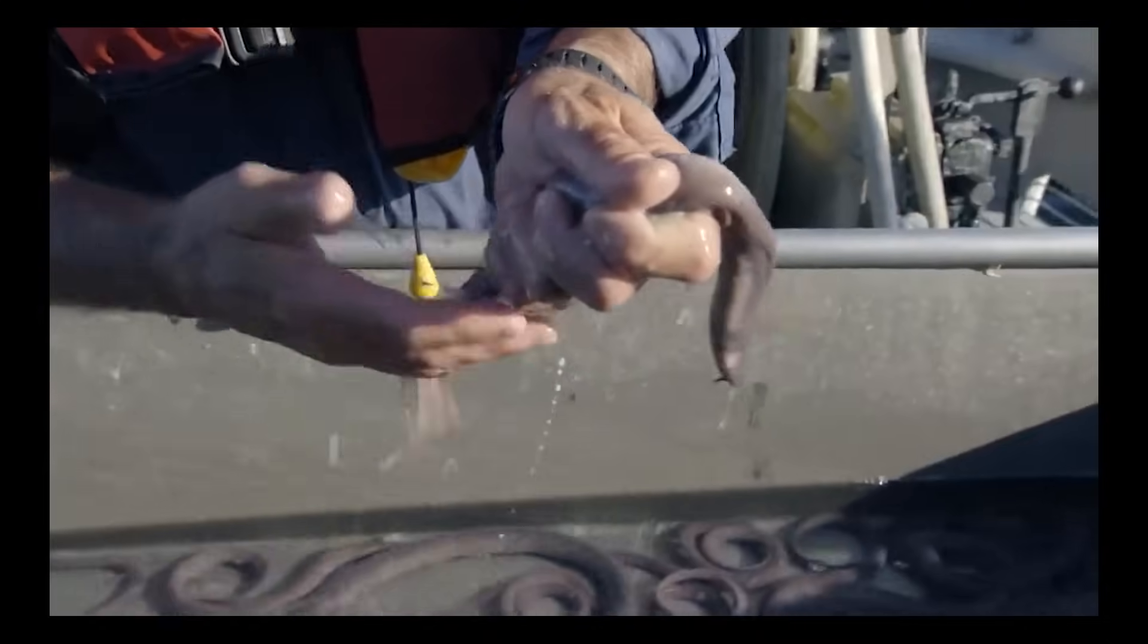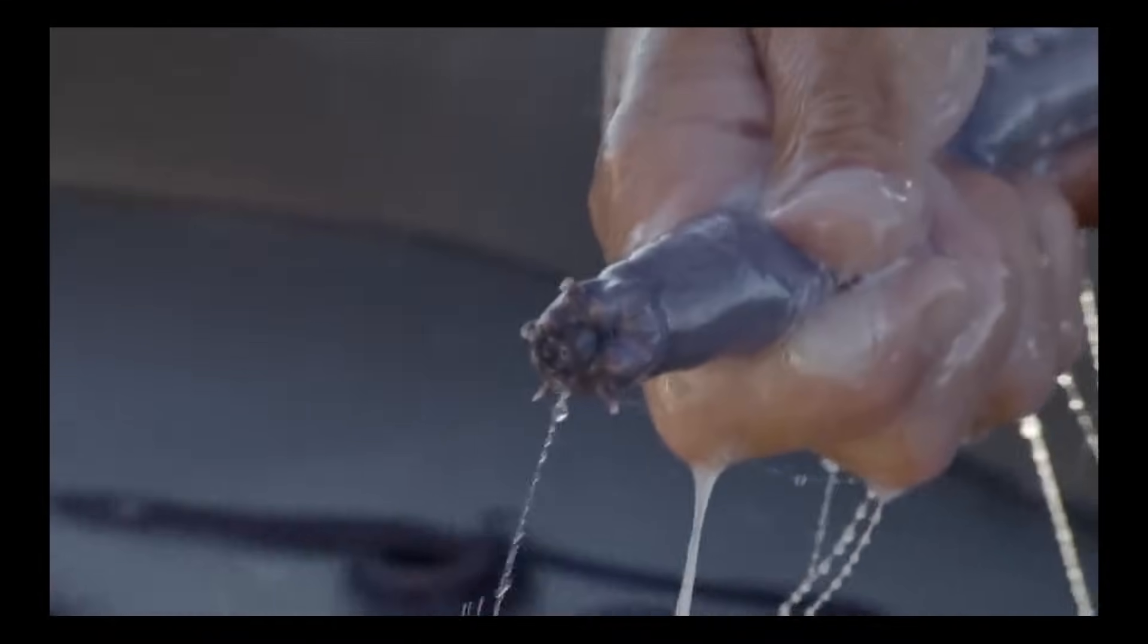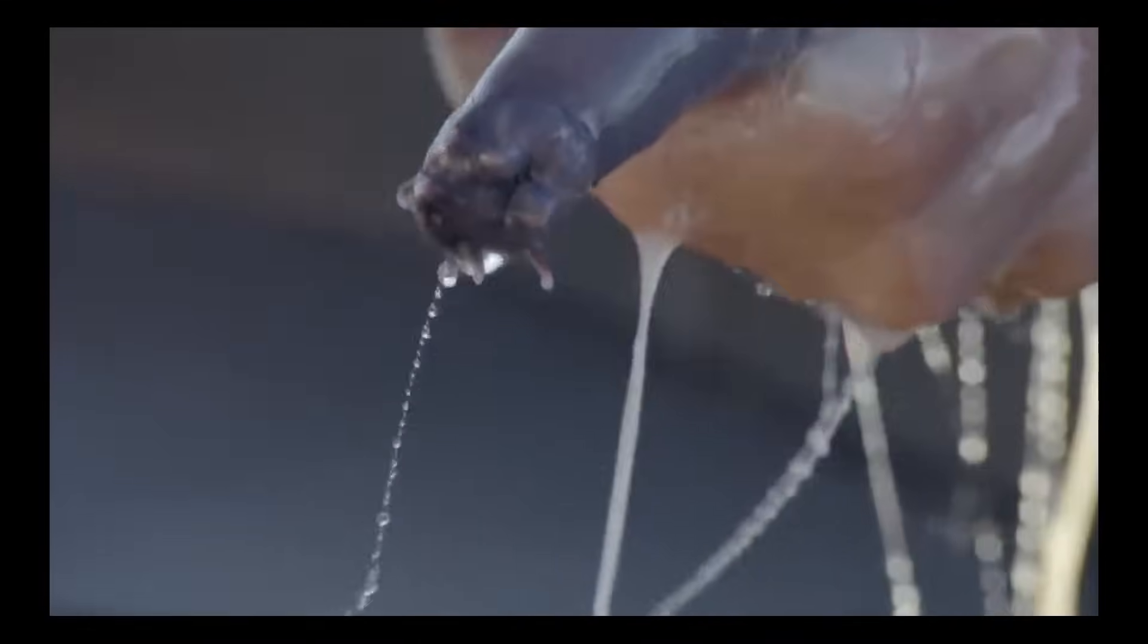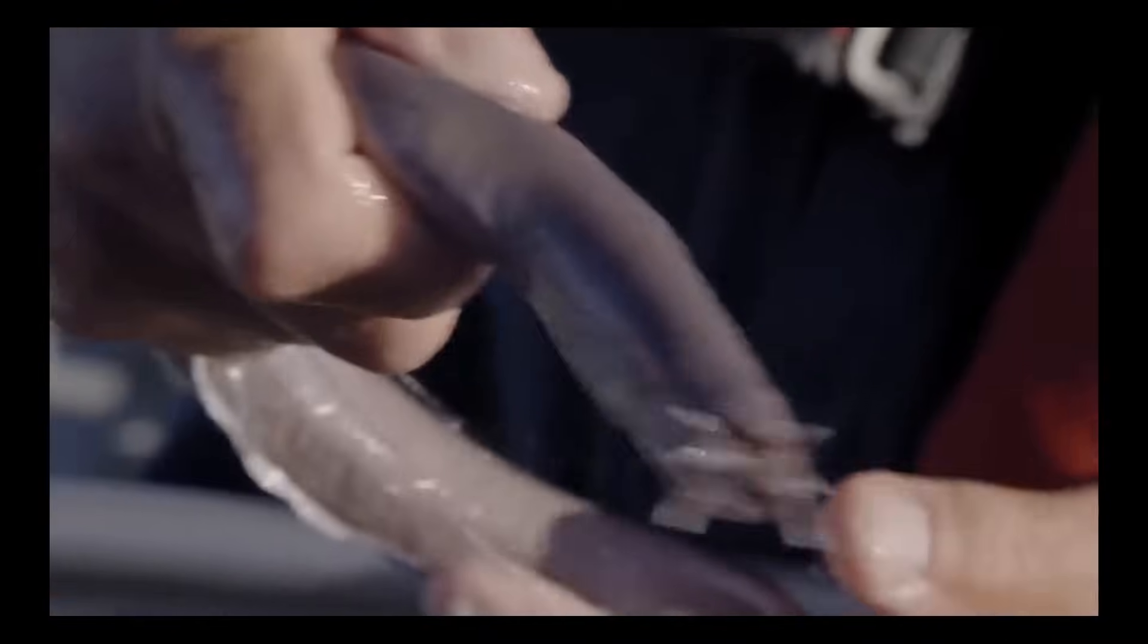Hagfish don't have jaws, but they do have teeth to rasp away at the carcasses of dead marine animals, which they eat from the inside out while sheltering inside their corpses.